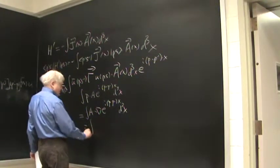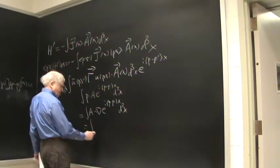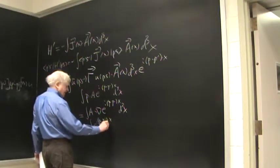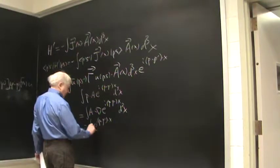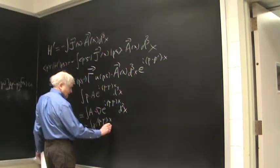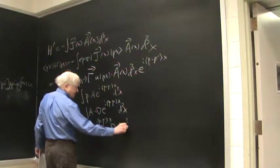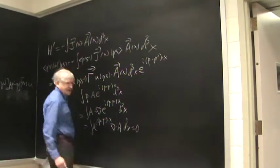And so this is now integrated by parts, we have e to the i p minus p prime dot x. I divergence of a d cubed x, and we're in the Coulomb gauge, so that's 0.